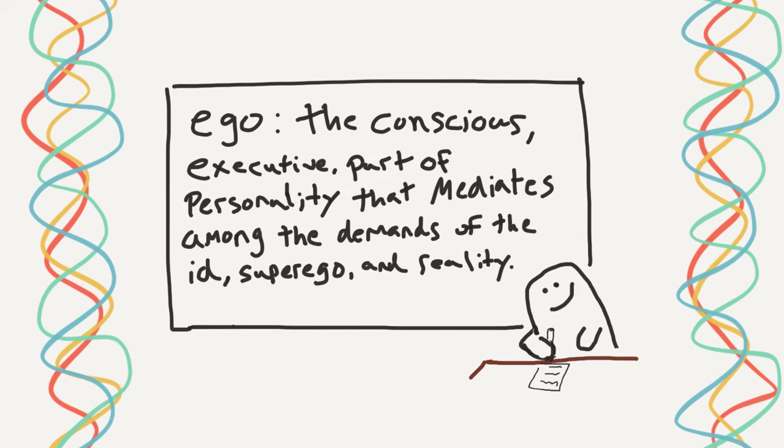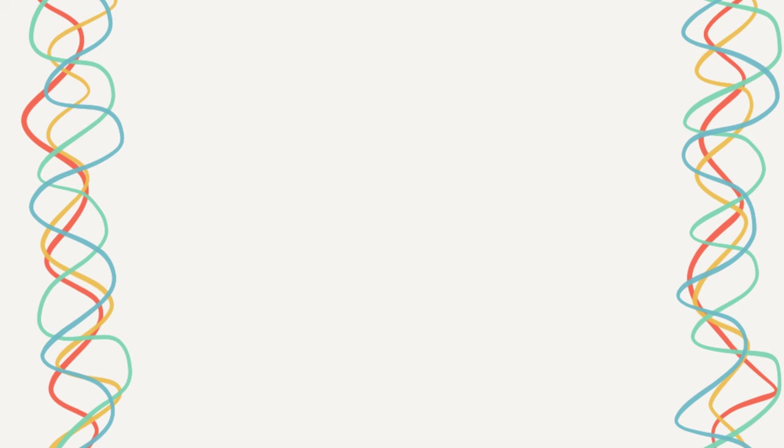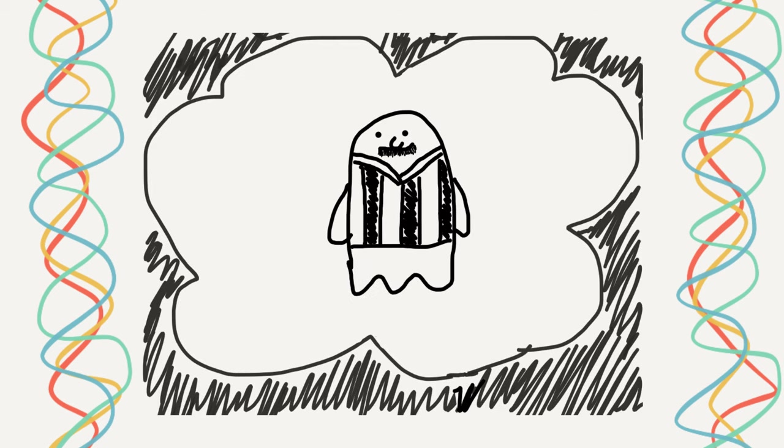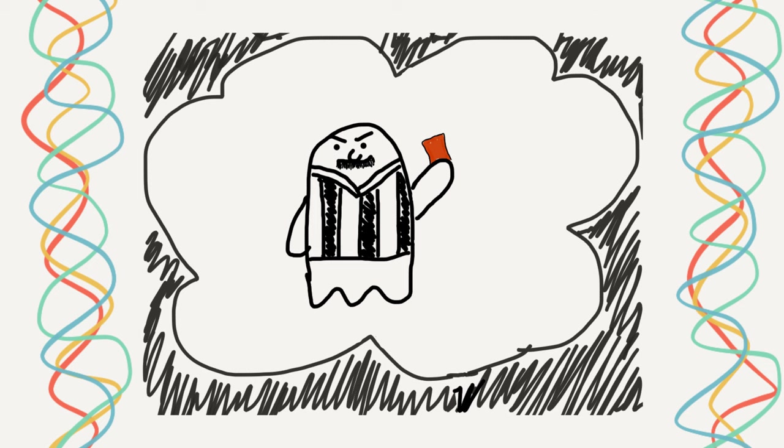Now, the ego is the conscious section of our mind. It's the executive part of our personality that really mediates the id and makes sure that it is in check. Now, the ego is something of a referee, making sure that the id is in check according to real-world rules.